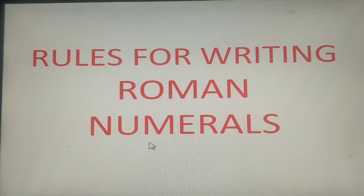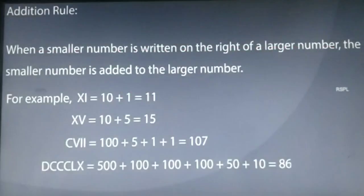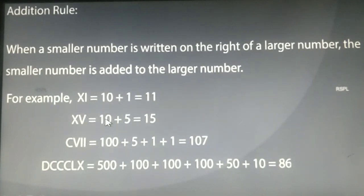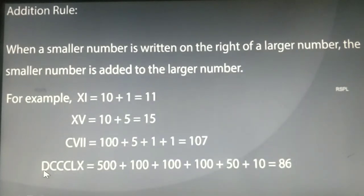Now, what are the rules for writing Roman numerals? The addition rule: when a smaller number is written on the right of a larger number, the smaller number is added to the larger number. For example, XI equals 10 plus 1 equals 11. XV equals 10 plus 5 equals 15. CVII equals 100 plus 5 plus 1 plus 1 equals 107. Similarly, DCCLX gives you 500 plus 100 plus 100 plus 100 plus 50 plus 10 equals 860.